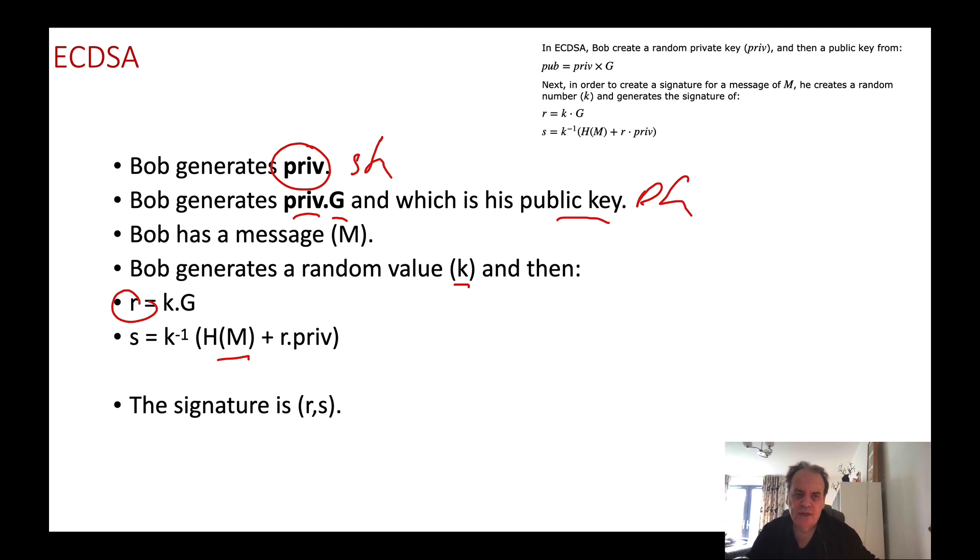Bob calculates K to the minus one, which is the inverse of K mod N, where N is the order. This is then multiplied by the hash of the message plus R times the secret key to give us the value of S. We create the signature as two integers, R and S.